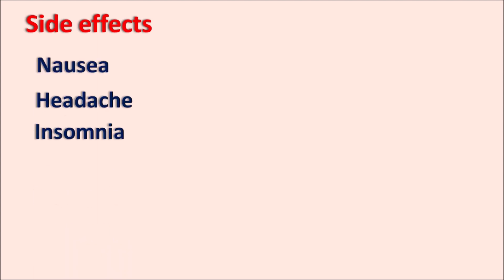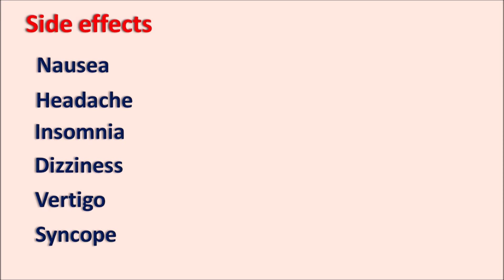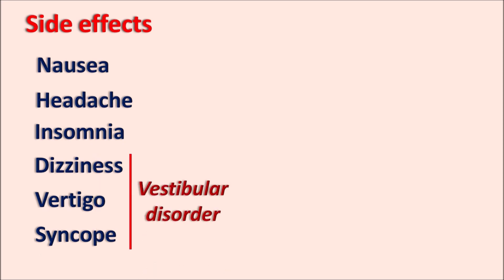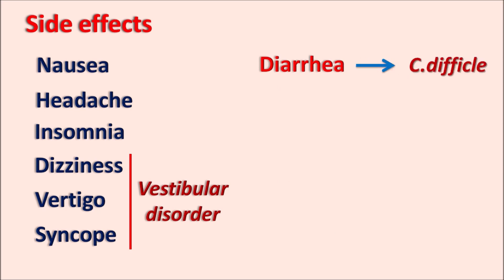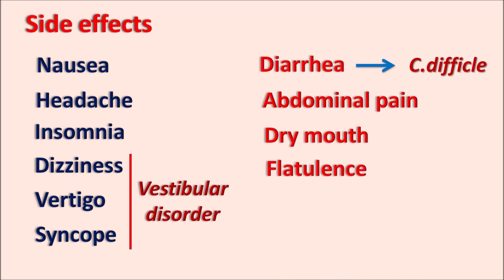What are the side effects? Ofloxacin mainly produces central side effects including nausea, headache, insomnia, dizziness, vertigo, and syncope — with dizziness, vertigo, and syncope being vestibular disorders precipitated by ofloxacin. It can also produce diarrhea due to development of Clostridioides difficile infection, increasing C. difficile-associated diarrhea (CDAD), as well as abdominal pain, dry mouth, flatulence, joint pains, and vaginitis.